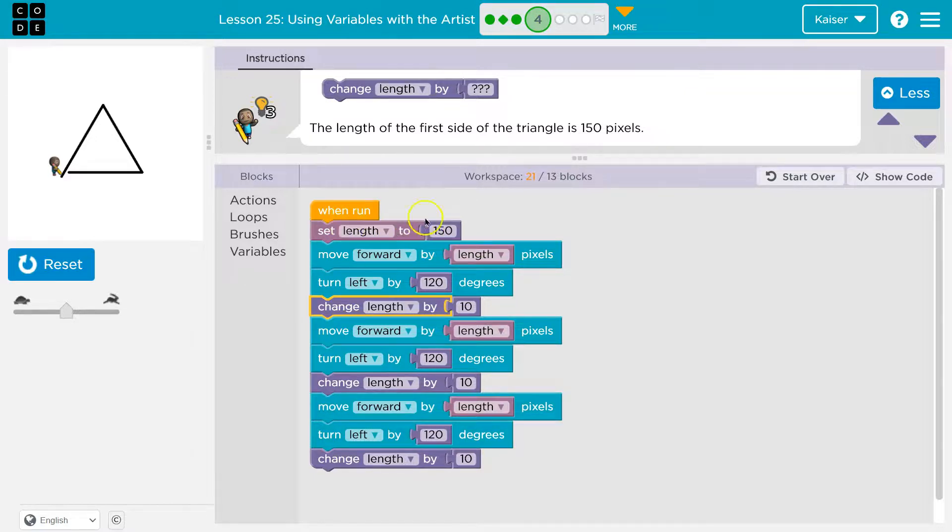So before, right here, length would be equal to nothing. It's now equal to 150. Well, if we change length by 10, length is not equal to 10. Length is equal to, and the computer says, what the heck was length equal to? Oh, it was equal to 150. Okay. So I'm going to add 10 to that. So at this point, right here,